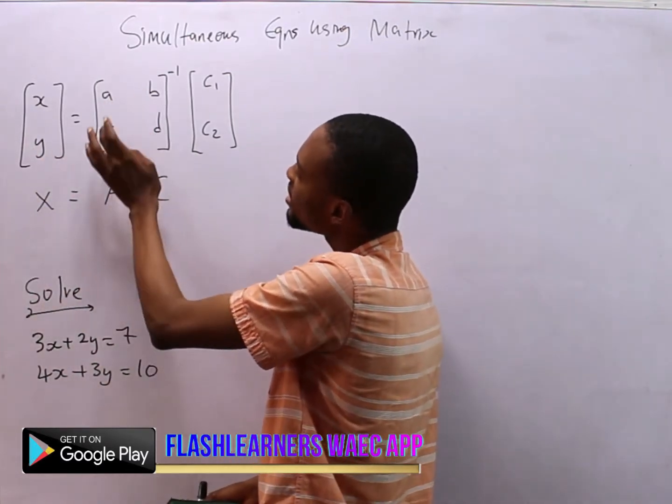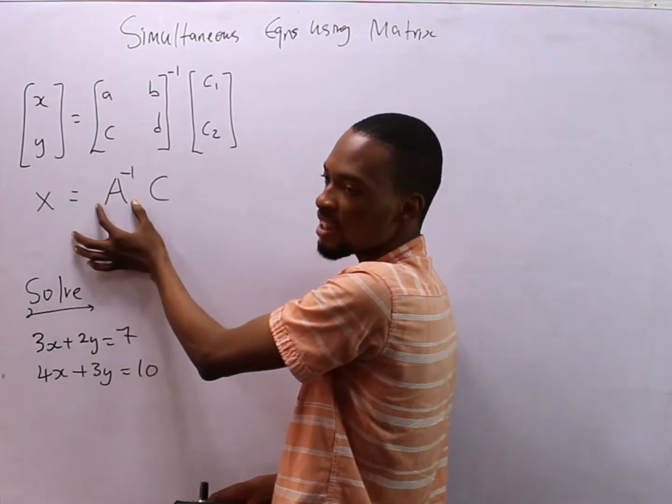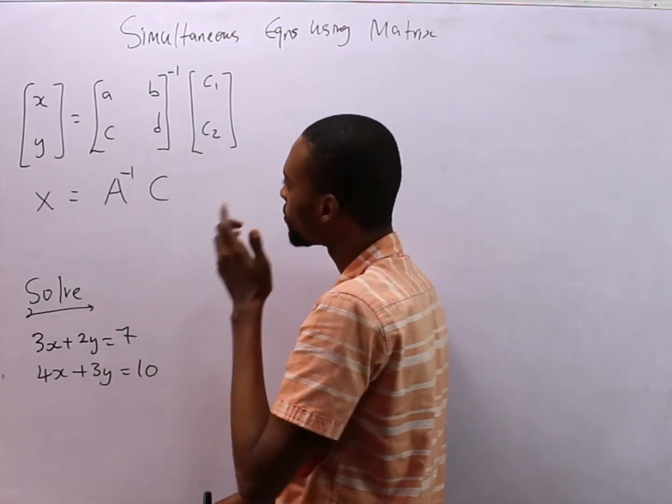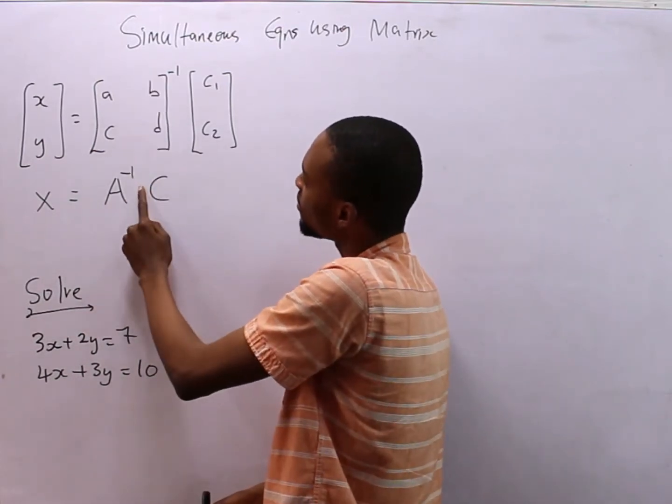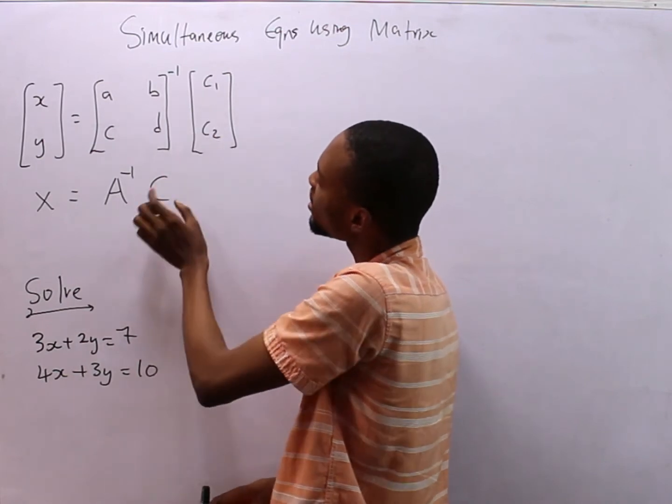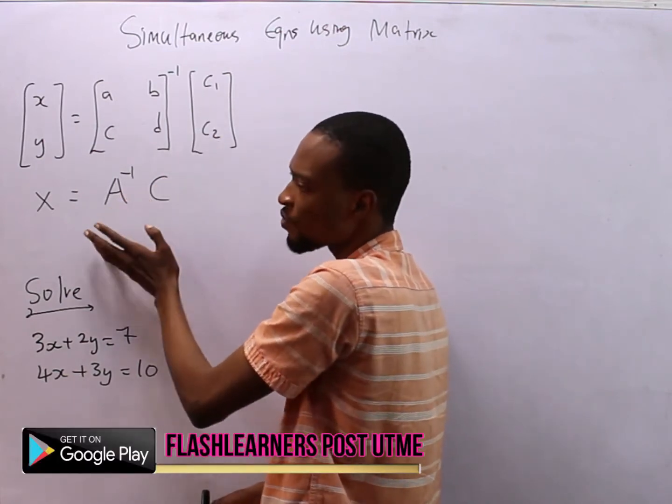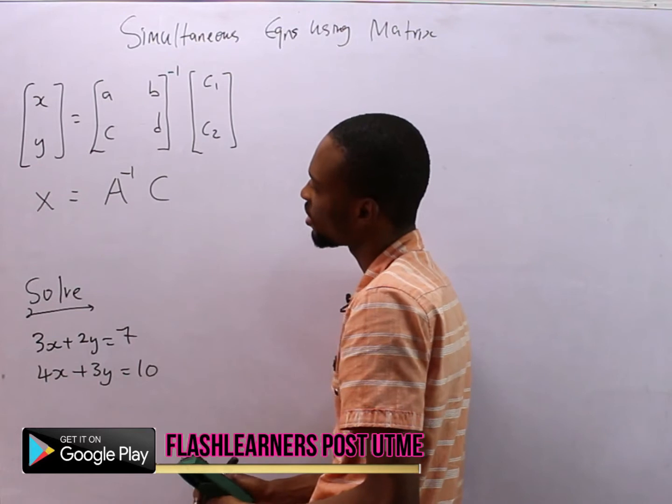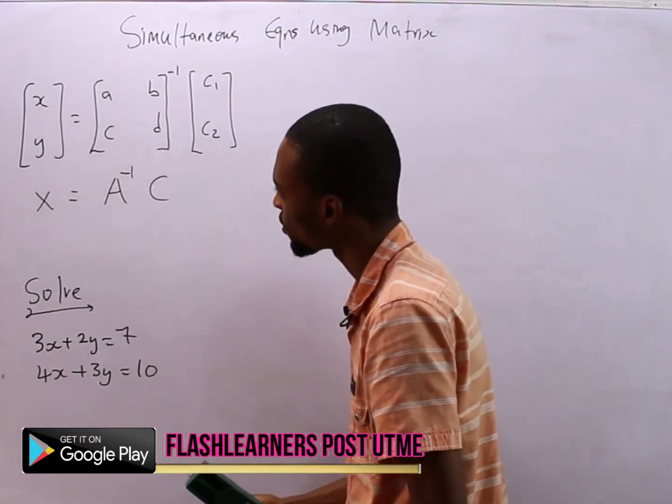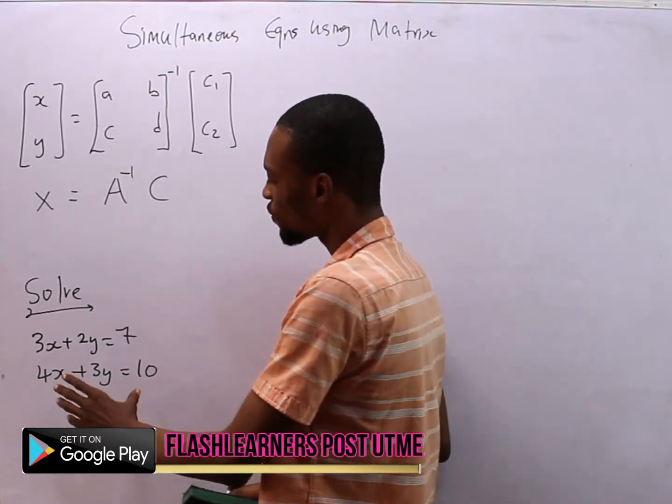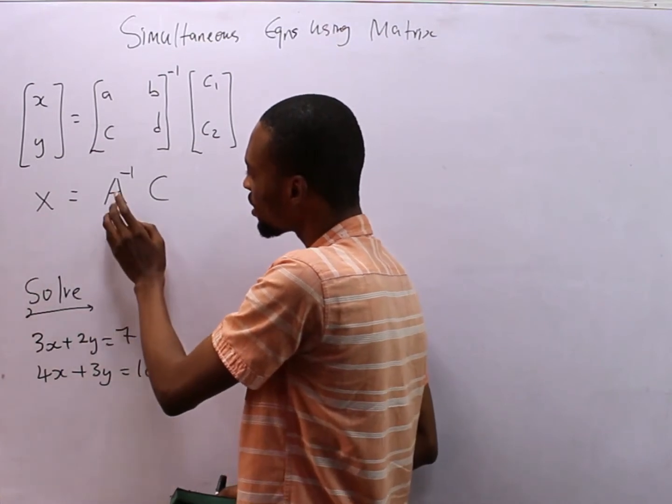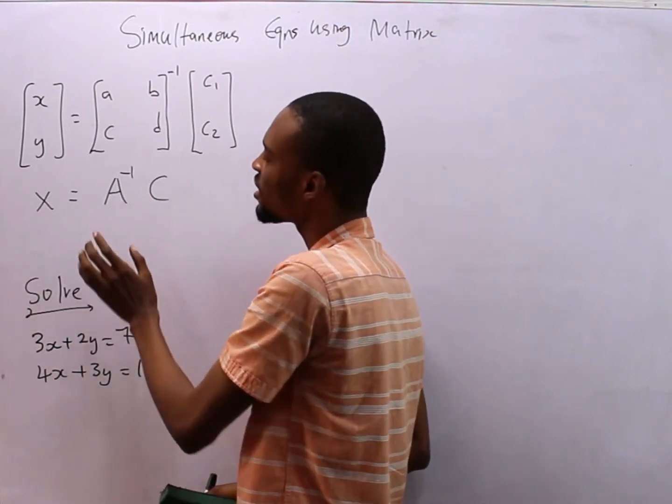Then a, b, c, d is also referred to as A if you want to put it in one form. And c1 and c2 is the same thing as C. So what does that imply? When given a simultaneous equation, first of all look for X, look for A, look for C, then A inverse.